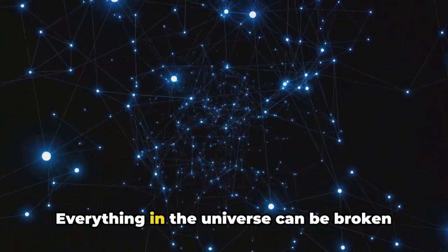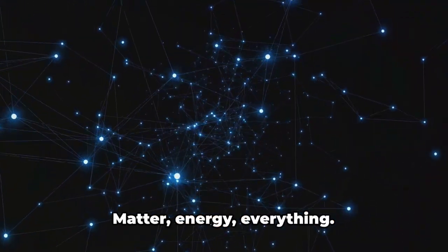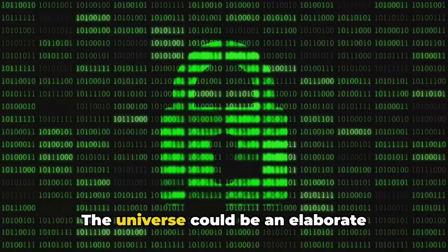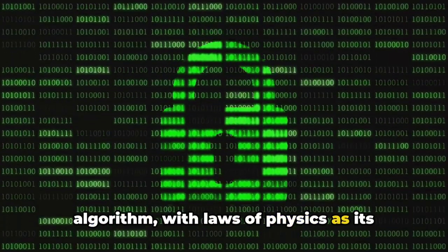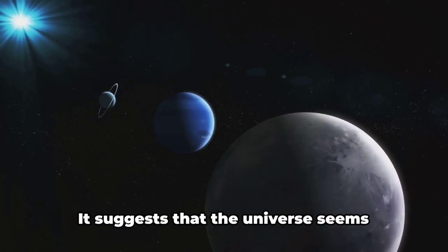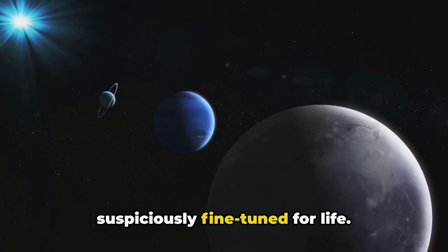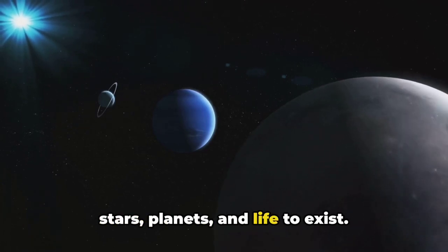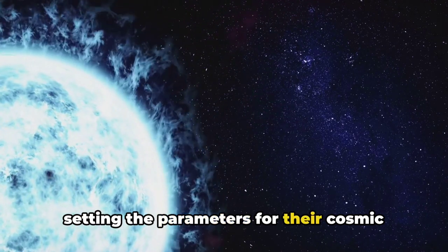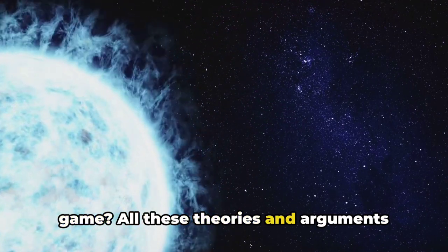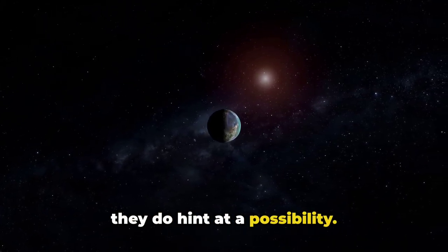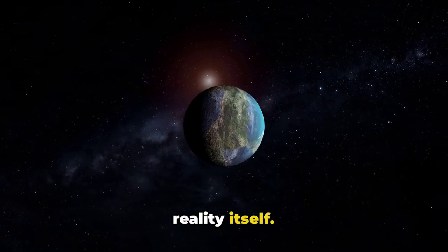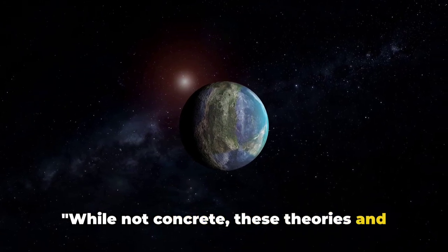Then there's the argument of information. Everything in the universe can be broken down into information. Matter, energy, everything. And where else do we see this characteristic? In computer code. The universe could be an elaborate algorithm with laws of physics as its operating instructions. Lastly, we have the anthropic principle. It suggests that the universe seems suspiciously fine-tuned for life. The fundamental constants of physics are set just right to allow for galaxies, stars, planets and life to exist. Could this be the work of a simulator setting the parameters for their cosmic game? All these theories and arguments might not provide concrete evidence, but they do hint at a possibility. They challenge our understanding of the universe and our place in it. They make us question the nature of reality itself. While not concrete, these theories and arguments do make you wonder.